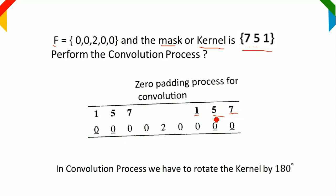We will use this rotated kernel to do the convolution process. Before doing the convolution process, for the original image we have to add zeros — this is called the zero padding process. Based on the kernel size, we have to add zeros to the left and right side of the image. So the original image F is 0, 0, 2, 0, 0, and we add two zeros on each side. This is the zero padding process, and now we will go for the convolution process.